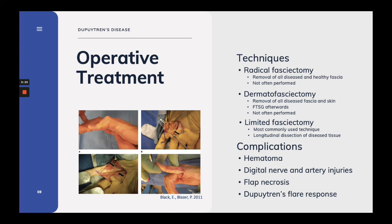Intraoperatively, you can see that the cord has been removed and the flexor tendon is shown. The flexor pulley system is not disrupted, and the neurovascular bundles are preserved. Immediate post-op photographs show less than 5 degrees of flexion contracture. Other complications, besides digital nerve and artery injuries, include hematoma, flap necrosis, and Dupuytren's flare response.